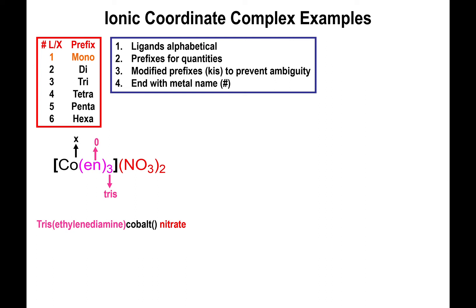Ethylenediamine has no charge, that's a neutral ligand. But nitrate has a charge of -1. Since we have two of them, that's going to yield an overall 2- charge. Since ethylenediamine is neutral, it contributes no charge. So overall we have x - 2 = 0, which is the overall neutral charge of the entire ionic salt. And what this tells us is that the charge of cobalt is 2. So we introduce the 2 as Roman numerals right after cobalt. So together this compound will be known as tris ethylenediamine cobalt(II) nitrate.